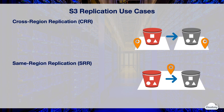S3 cross-region replication asynchronously copies objects across buckets in different AWS regions, whereas same-region replication copies objects across buckets in the same region. When you choose cross-region or same-region replication, you should consider the following use cases.